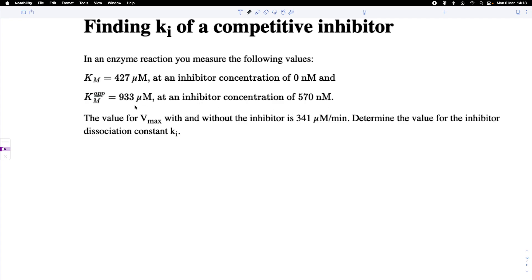And we also find Vmax does not change when we have an inhibitor present, which is indicative that indeed we are working with a competitive inhibitor. And what we want to do now is find a way how we can calculate the inhibitor dissociation constant from these values that we have got here.